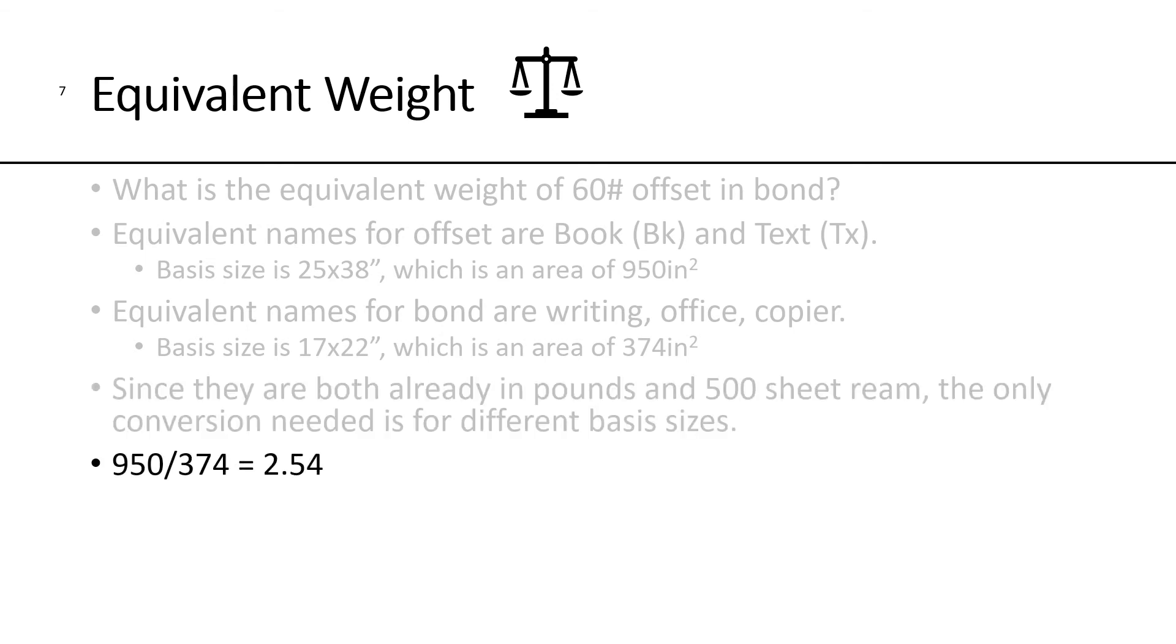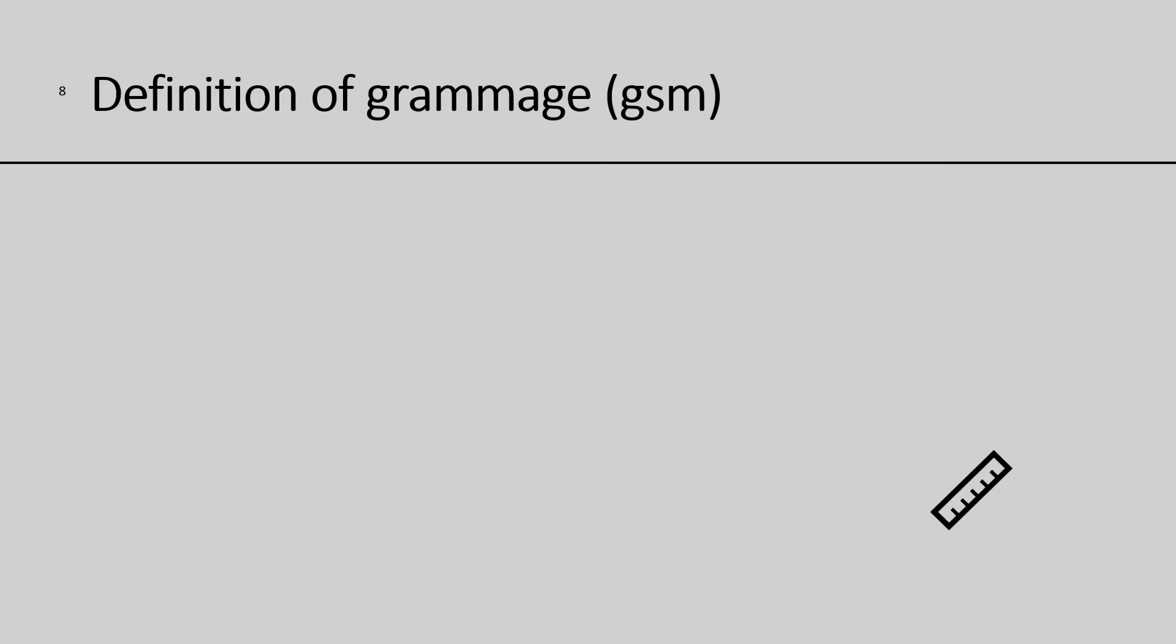If you take the area, 950, and divide by the other area, 374, you get an answer of 2.54. So, if you take the 60-pound book and you divide it by 2.54, you get an equivalent weight of 23.6 pounds, which rounding up is 24-pound bond. So, the 60-pound paper that we've been using is equivalent to 24-pound bond paper.